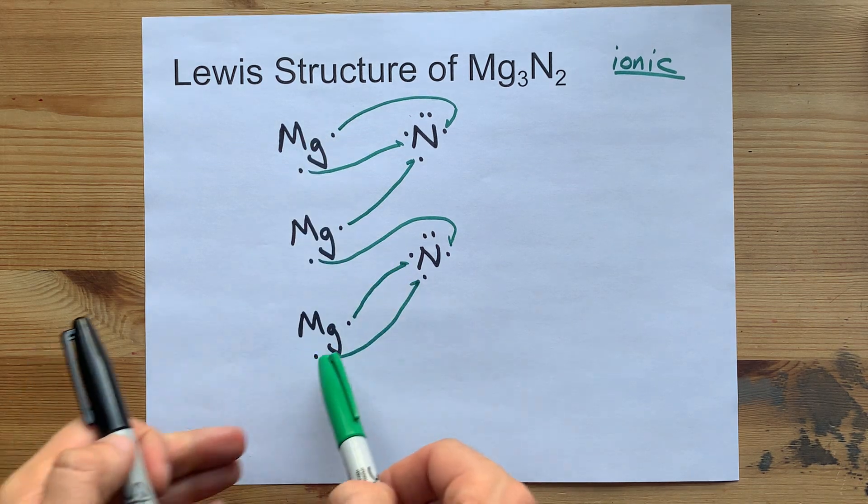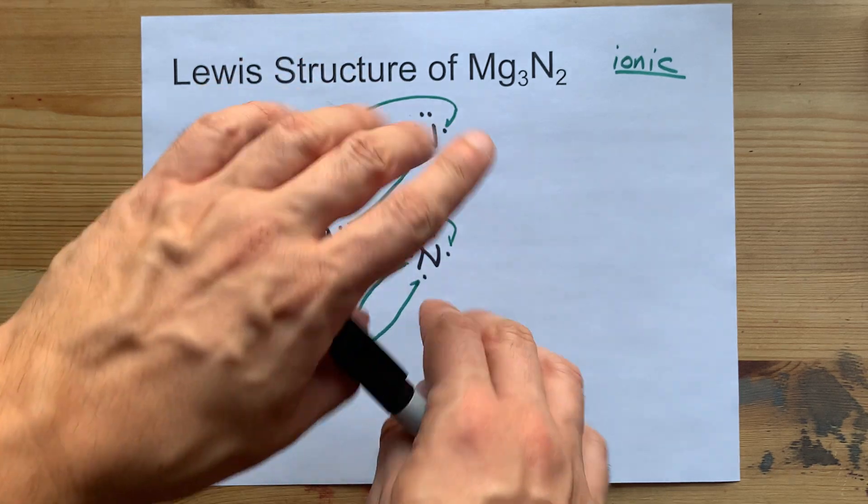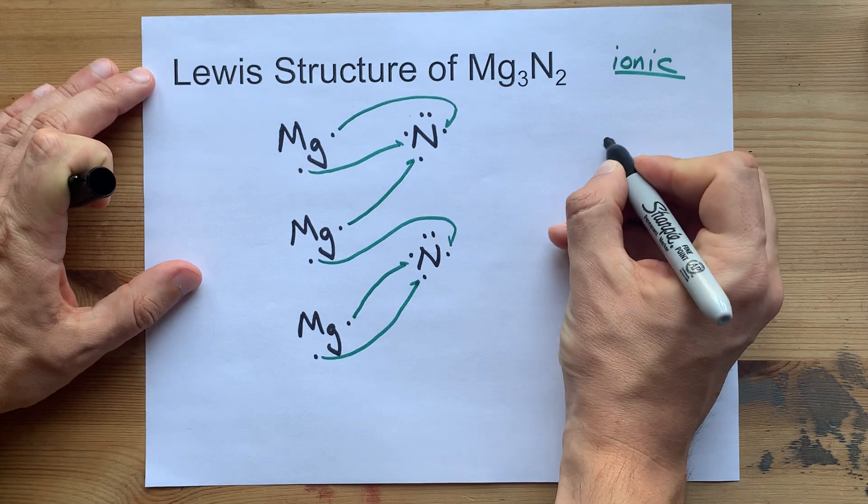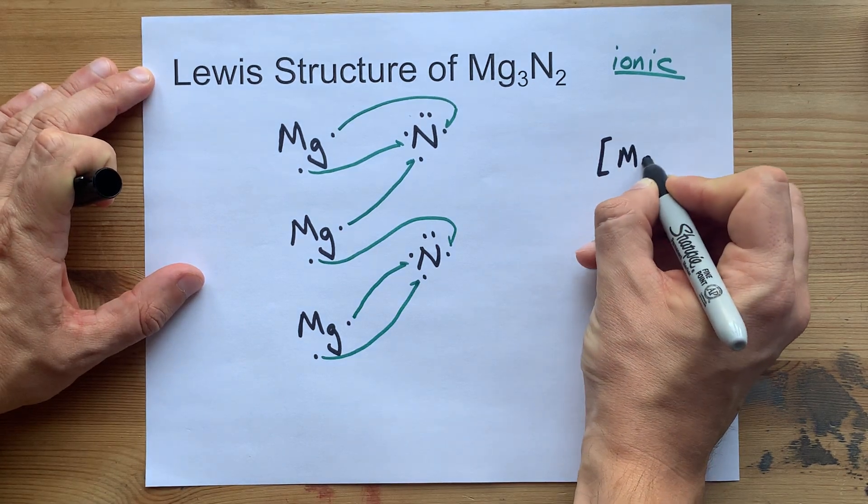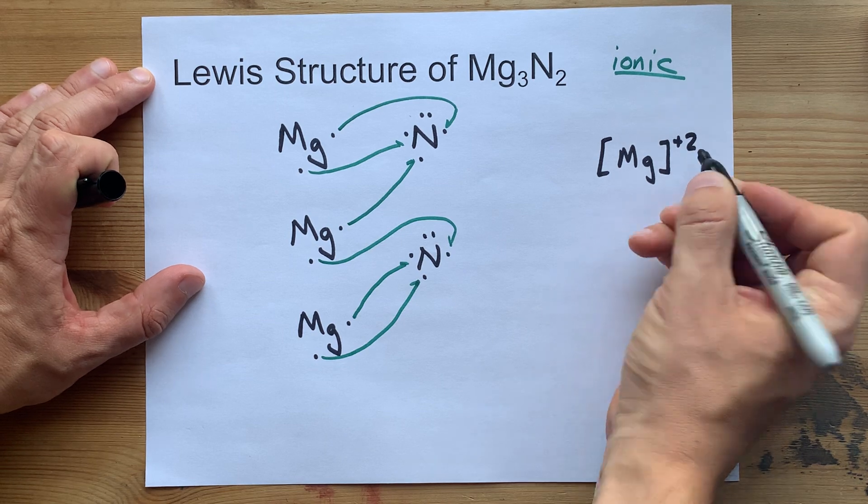Now all the magnesiums have given away all their electrons, and each nitrogen, which brought 5, gained 3 each. Your final structure here will show that magnesium gave away its electrons, gave away 2 electrons.